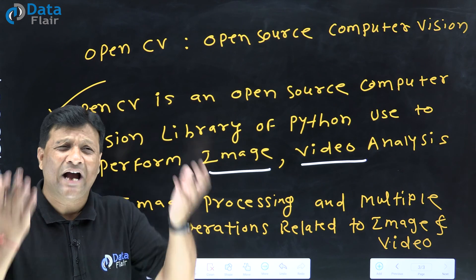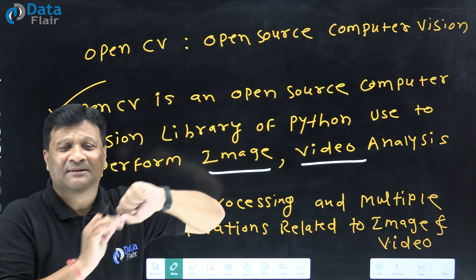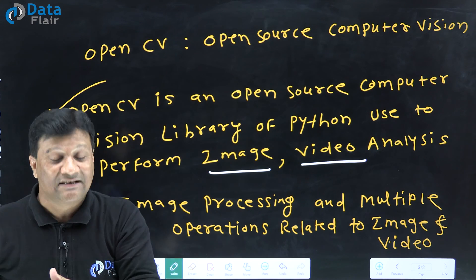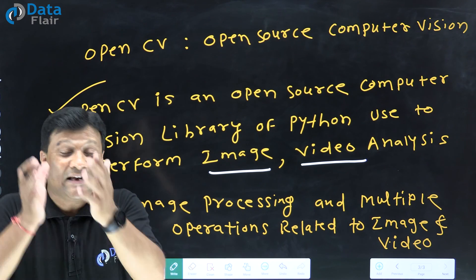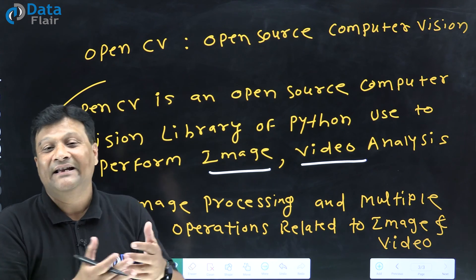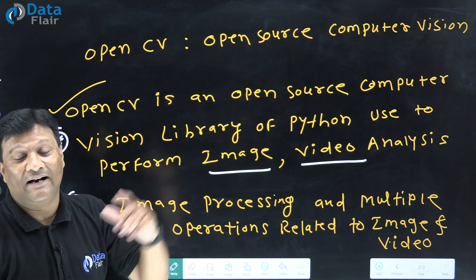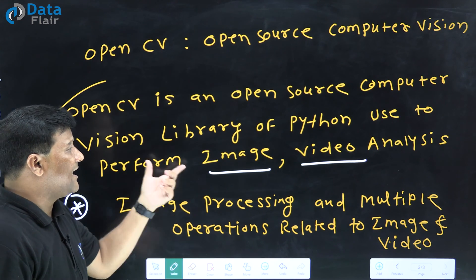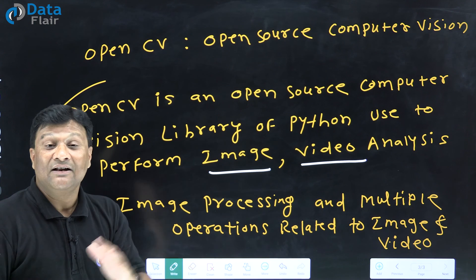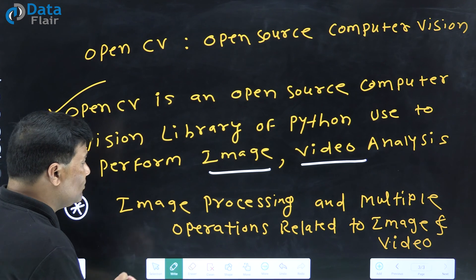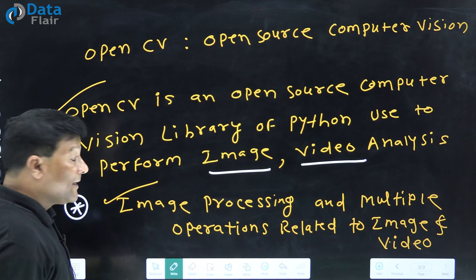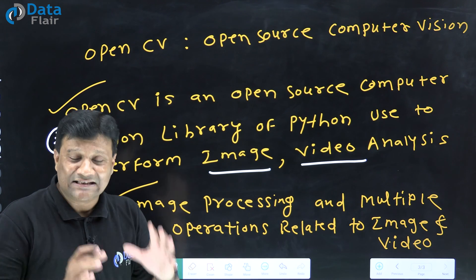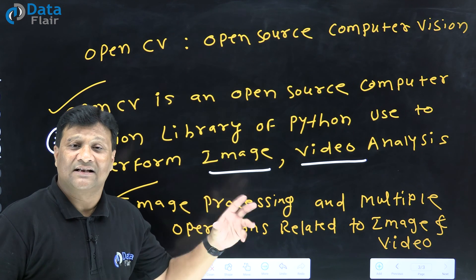For image processing, you can get by without heavy mathematical calculations — so I'm not saying numpy or pandas are not important, but the focus here is on the interesting image and video analysis concepts. The definition: OpenCV is an open-source computer vision library of Python used to perform image and video analysis. This library is basically used to perform image processing and multiple operations on images and videos.